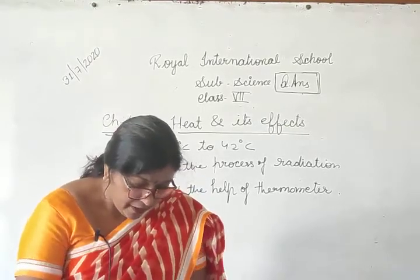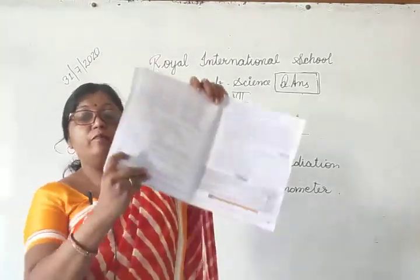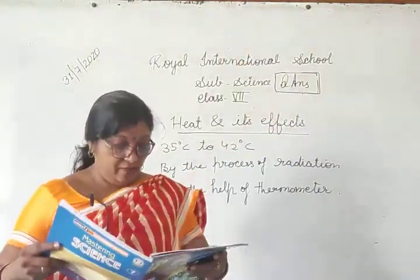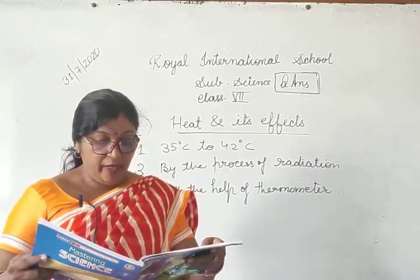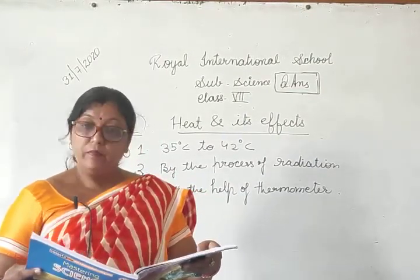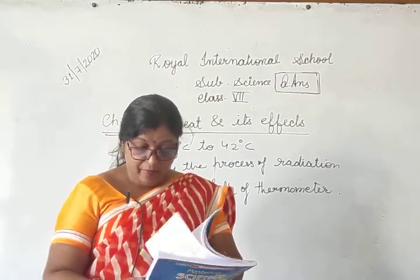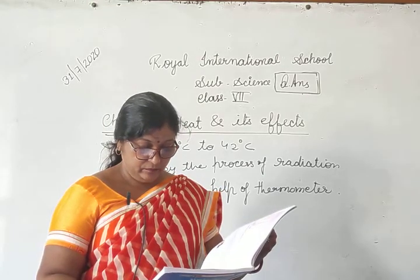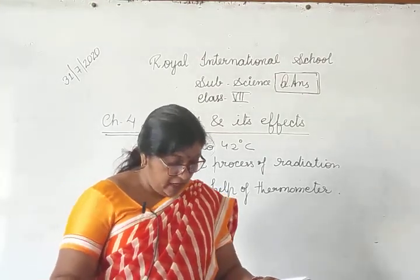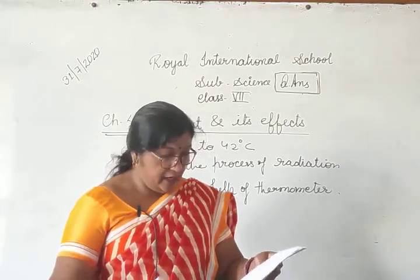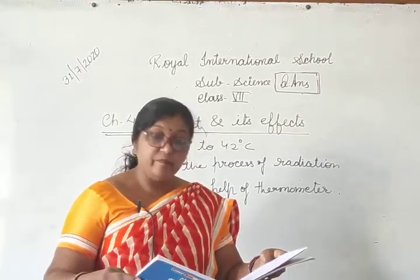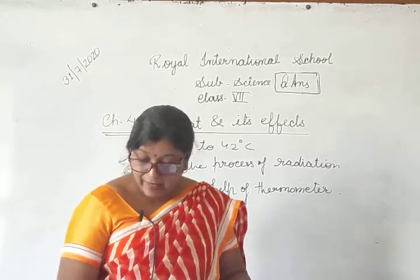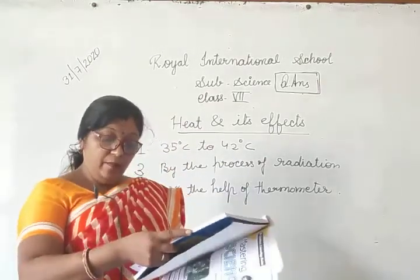Now come to the next — D is your short answer type question. First: why is mercury thermometer preferred over alcohol thermometer? For that, come to page number 35. Mercury thermometer is preferred over alcohol thermometer because —